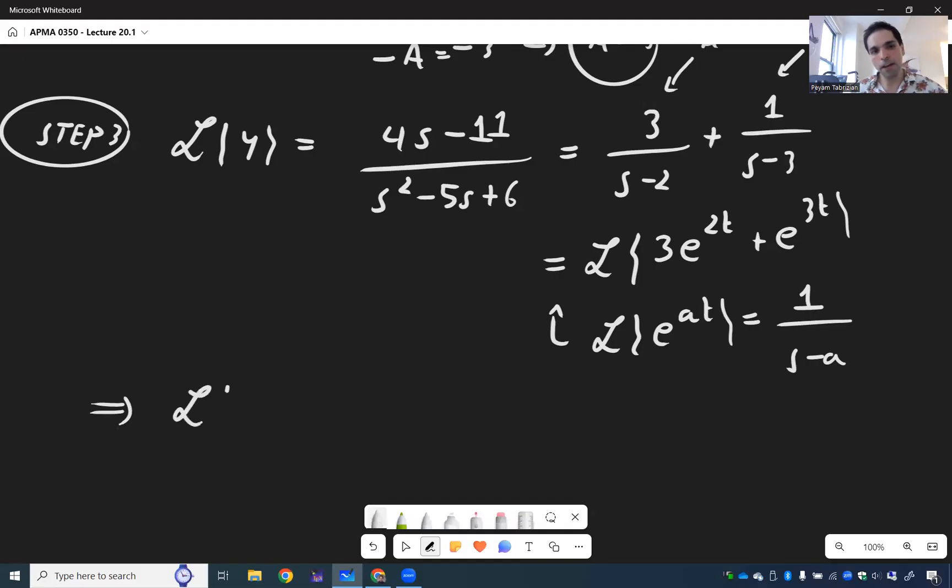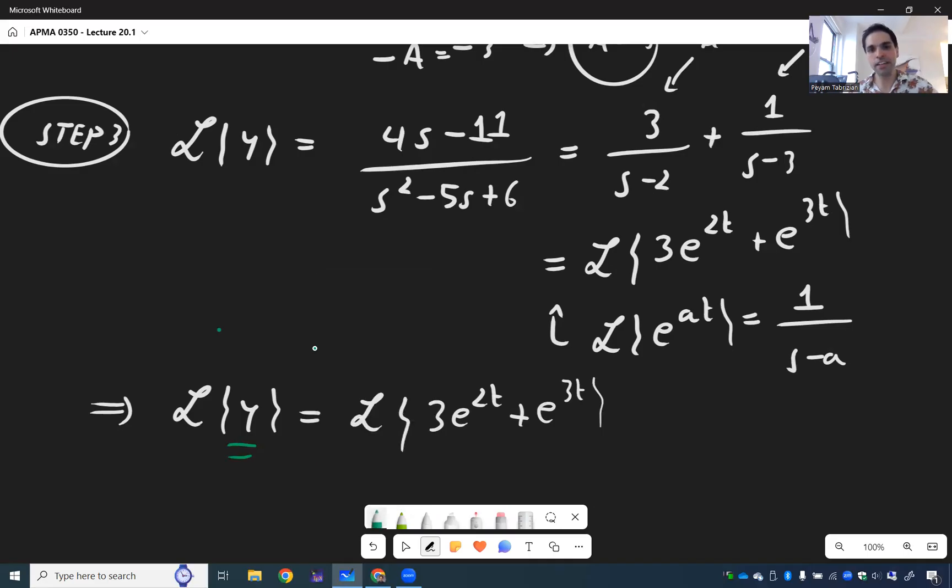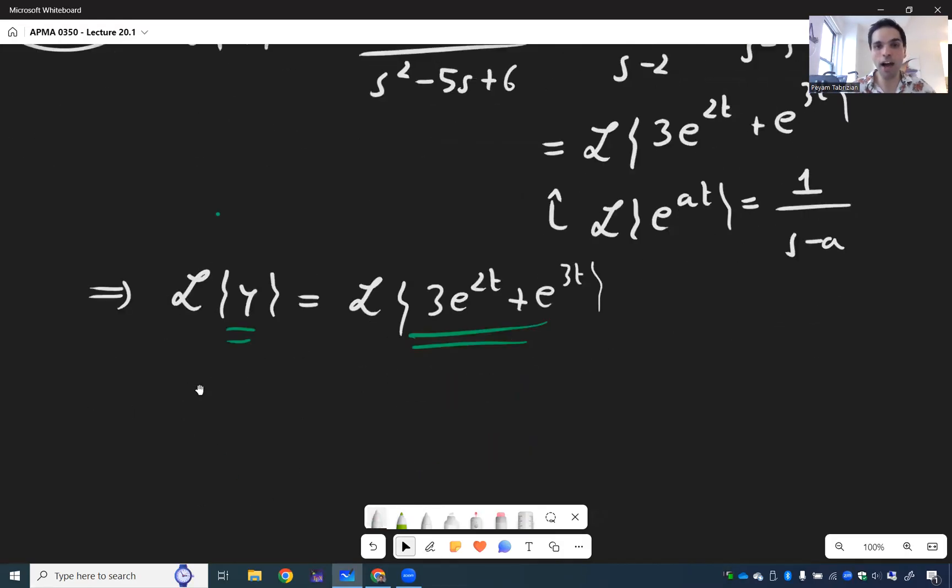And so in the end, what do we get? Laplace transform of y is the Laplace transform of 3e to the 2t plus e to the 3t. And now comparing instead of staring, we finally get that the mystery villain function y is 3e to the 2t plus e to the 3t.